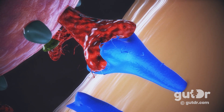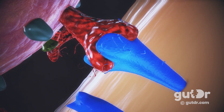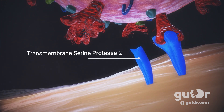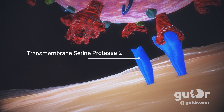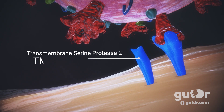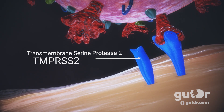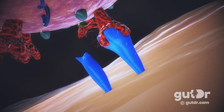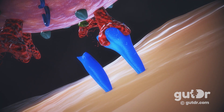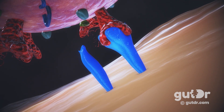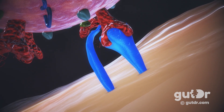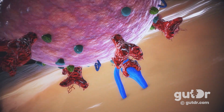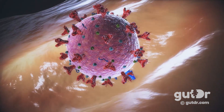The spike protein locks onto the ACE2 receptor. But another protein called transmembrane serum protease 2, also known as TMPRSS2, is also needed. This protein is located on the surface of cells in the respiratory and digestive tracts and helps to cleave, or cut off, a part of the spike protein of SARS-CoV-2, priming it to allow for entry into the cell.